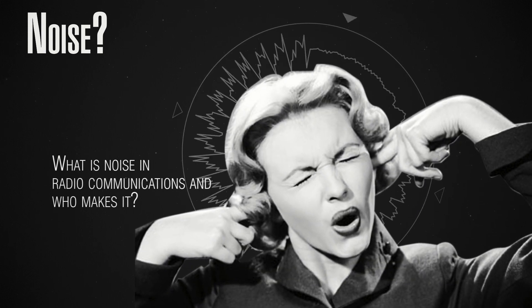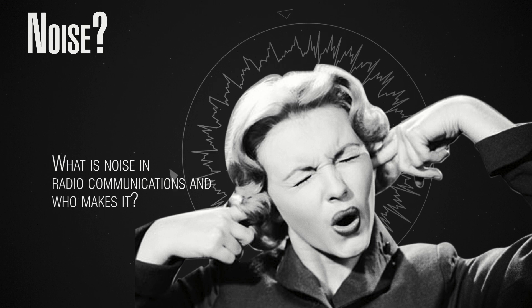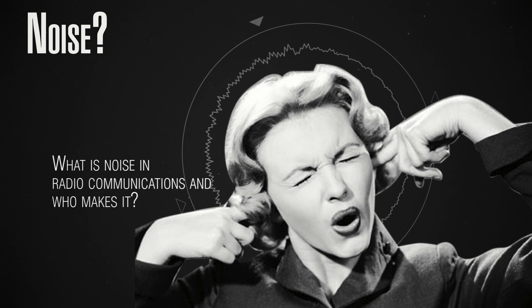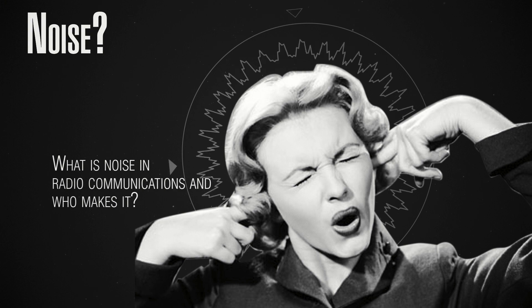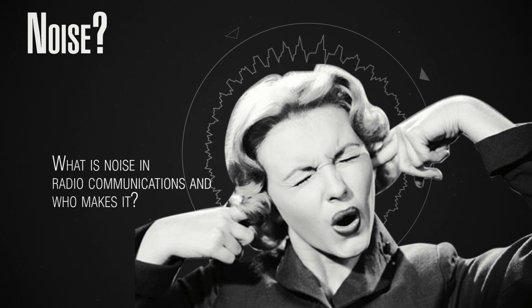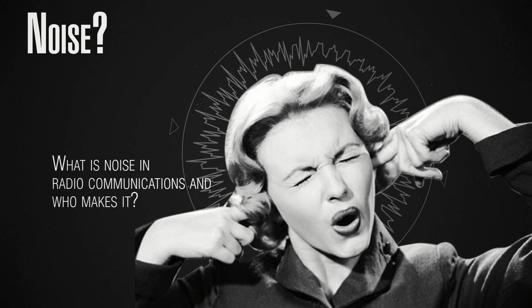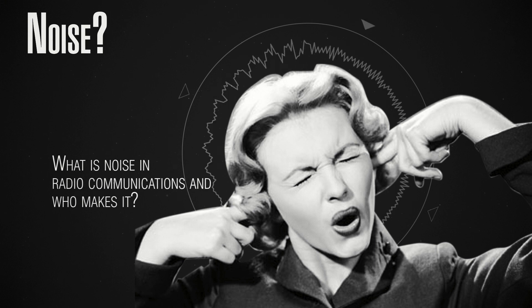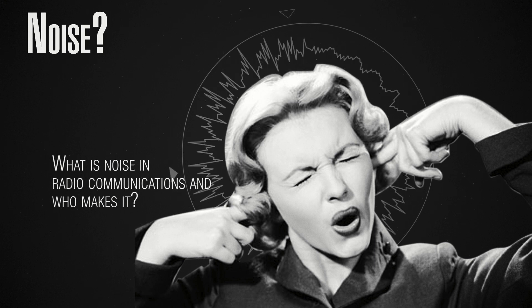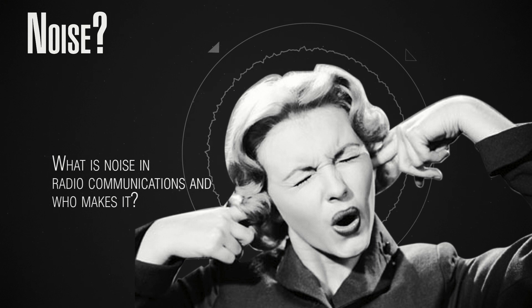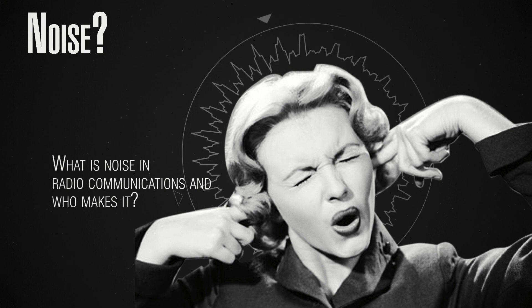For example, if you listen to your favorite song, the sound of the song is the wanted signal and your loud neighbors might be the noise source. Their sound disrupts the information flow from your favorite song and you can't hear it well. Something very similar happens when we want to receive a certain signal and our system is noisy. You might wonder who makes this noise.